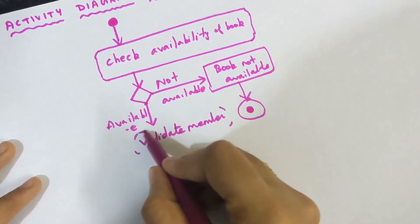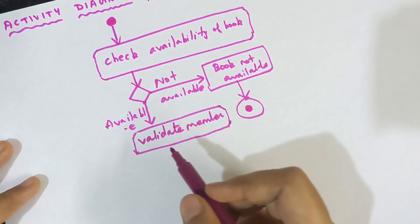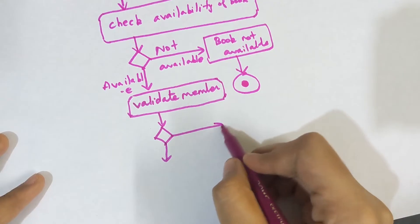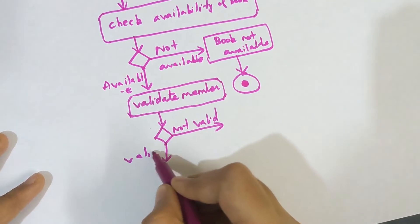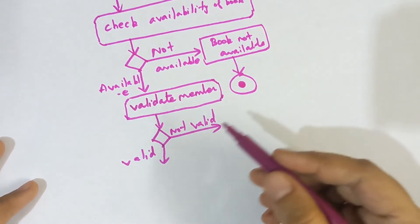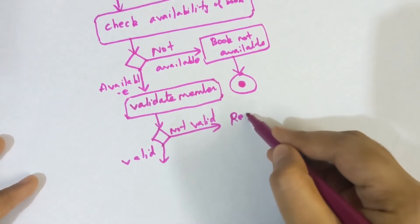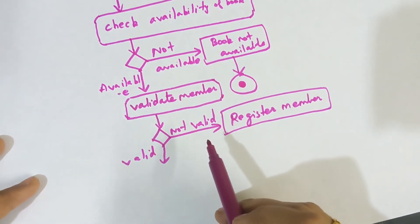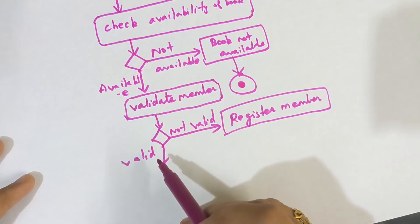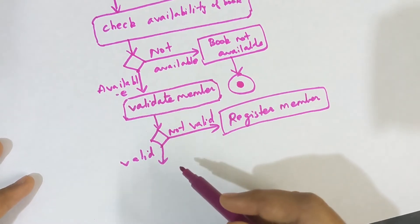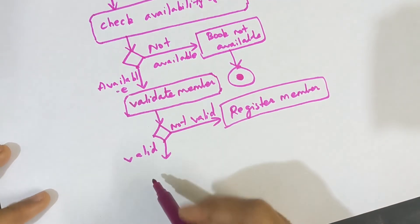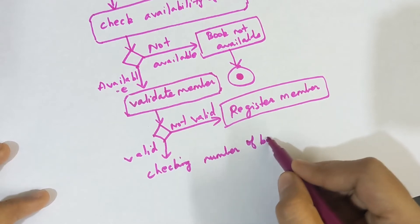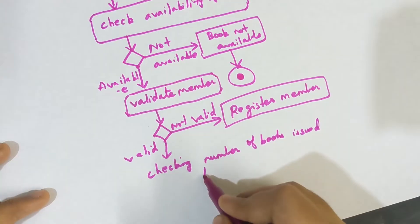Now, if the book is available, the next step is you need to validate the member. Draw the rounded-corner rectangle and write 'Validate Member'. Again, draw a decision box with two options: 'not valid' and 'valid'. Not valid means the member is not a part of the library, so the member needs to register. So you draw an activity to register the member to the library.